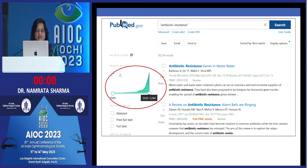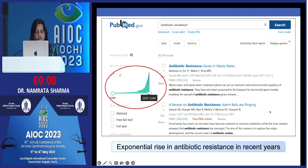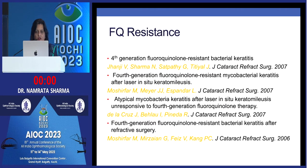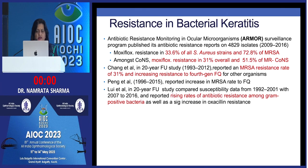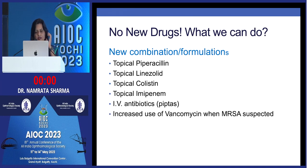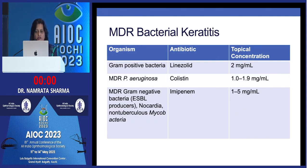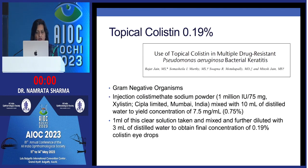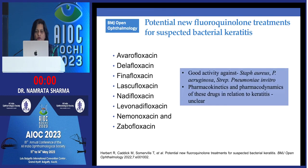Antibiotic resistance is a reality, with an exponential rise in recent years as shown in PubMed. Fluoroquinolone resistance is well-documented. New approaches include topical preparations of linezolid, colistin, imipenem, and piperacillin-tazobactam, with increased use of vancomycin when MRSA is suspected. Single case reports show topical colistin led to healing of bacterial keratitis. Newer fluoroquinolones are under investigation but none are yet commercially available.